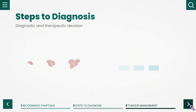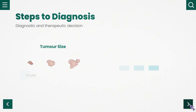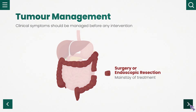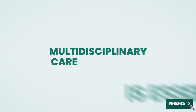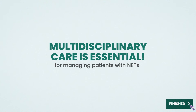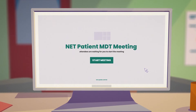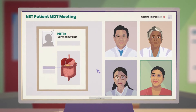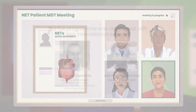Full diagnostic and therapeutic decision making should be based on tumour size and grade. Clinical symptoms should be managed before any intervention. Surgery or endoscopic resection are the treatment of choice for localised disease in early grade NETs. Multidisciplinary care is essential for managing NETs, whether localised or advanced. Early referral to a NET Centre of Excellence or specialist centre is highly recommended and can improve patient prognosis and quality of life.